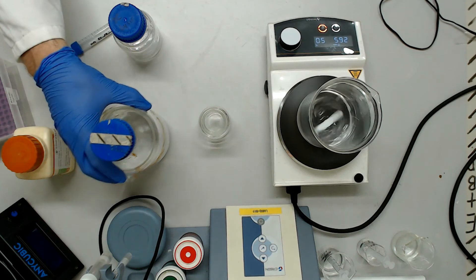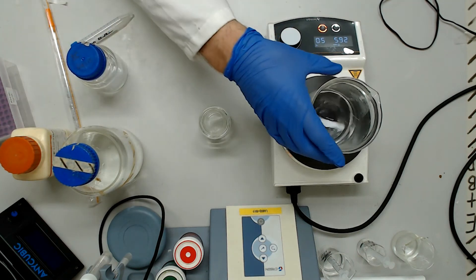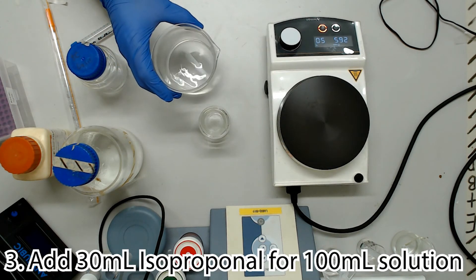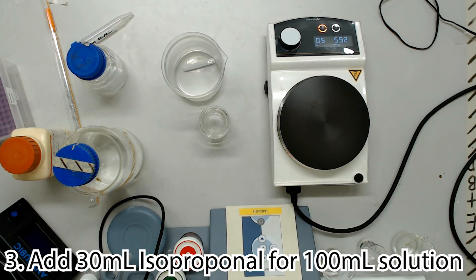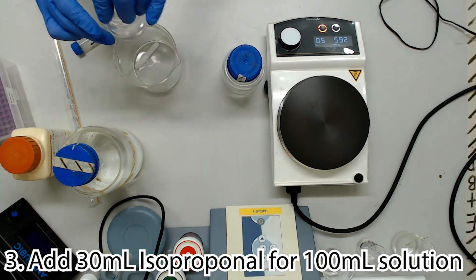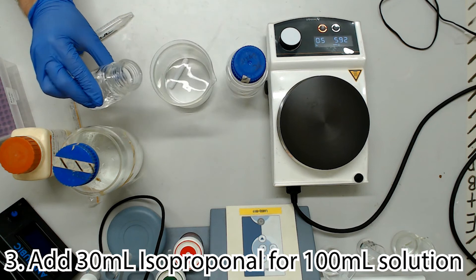Has all your salt dissolved yet, or shall I keep rambling? Oh, it looks like we're done! We're now going to add some isopropanol equal to 30% of the intended stock volume for our buffer. Since it's 100 mils here, I'll be adding 30 mils of isopropanol.